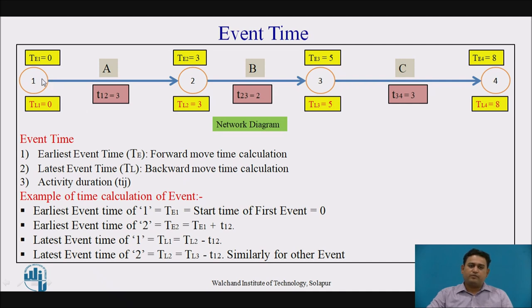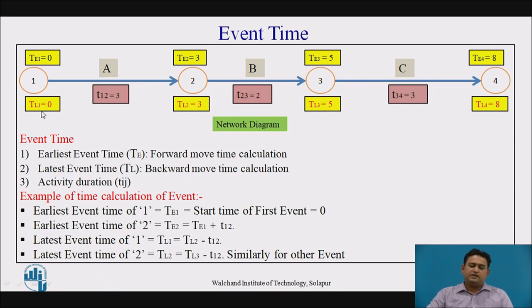Forward moving means from left hand side to right hand side. We move from the left hand side to the right hand side for the earliest event time, and from the right hand side to the left hand side for the latest event time calculations. TL1 is the latest time of event 1, and TL2 is the latest time of event 2.